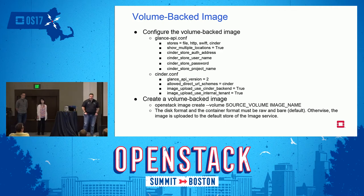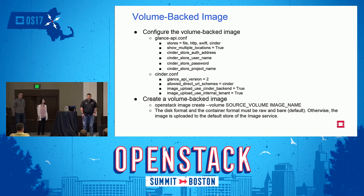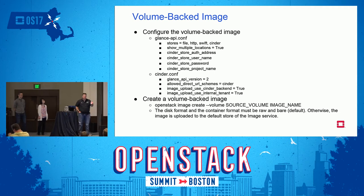Another way to do this is to work with a volume-backed image. You need to get Glance ready to use Cinder as the backend for that image — set up authentication into Cinder and ensure Cinder knows how to talk back to Glance. Then you can use the OpenStack client to do an image create and give it a volume, and it will create a volume for that image backed by volume storage instead of copying it each time you do a boot-from-volume.